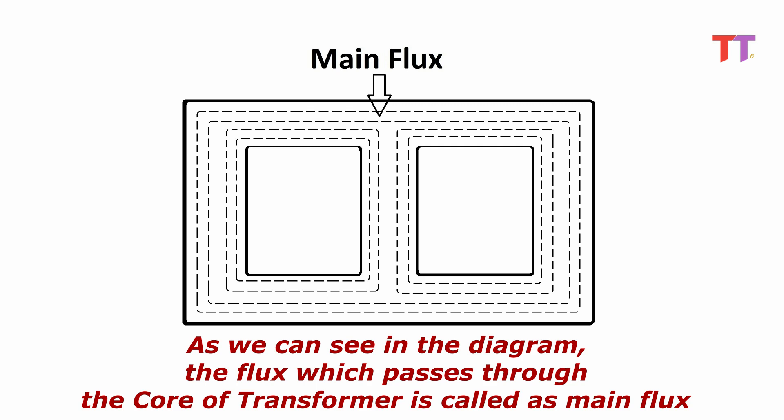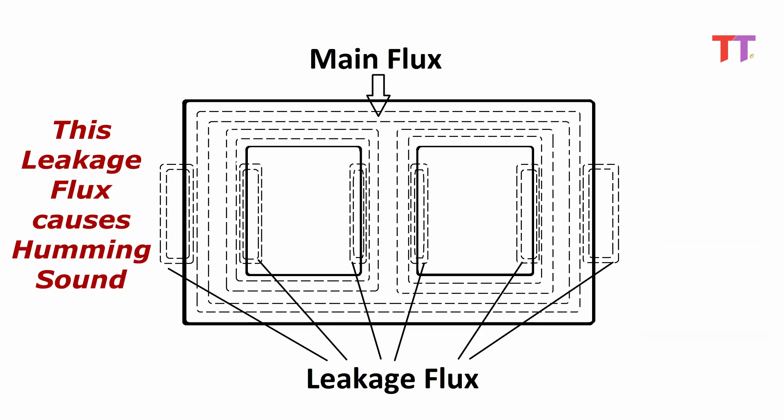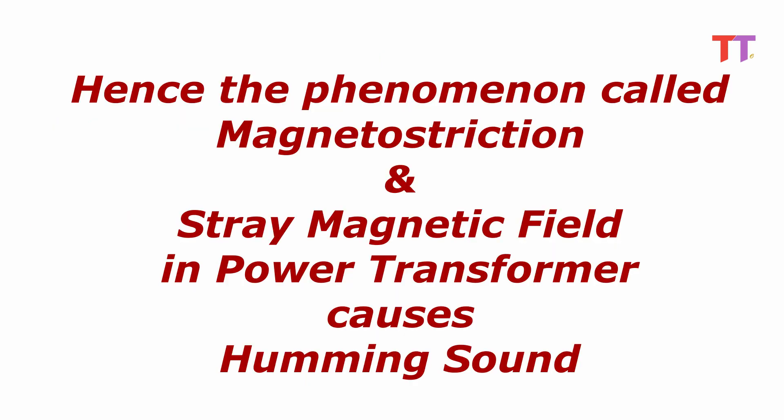As we can see in the diagram, the flux which passes through the core of the transformer is called the main flux, and the flux which passes through the winding insulation and transformer insulating oil instead of the core is called the leakage flux. This leakage flux causes humming sound. Hence, the phenomena of magnetostriction and stray magnetic field in a power transformer together cause the humming sound.